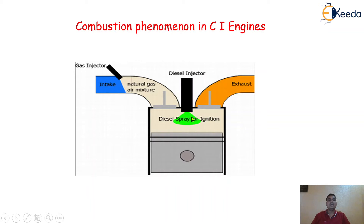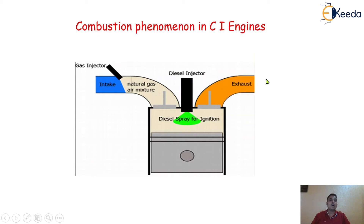Then the combustion process starts to take place and the power or expansion process begins — the piston moves from TDC to BDC. This is called the power or the expansion stroke. Finally, the piston moves from BDC to TDC, and whatever the air-fuel mixture burns inside the engine cylinder is sent out to the atmosphere through the exhaust valve.